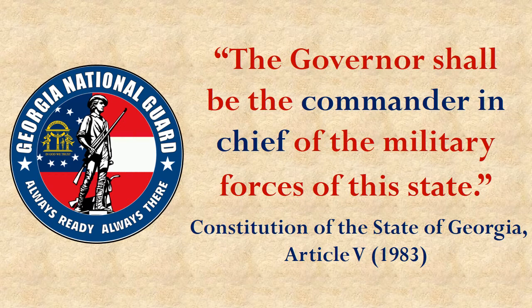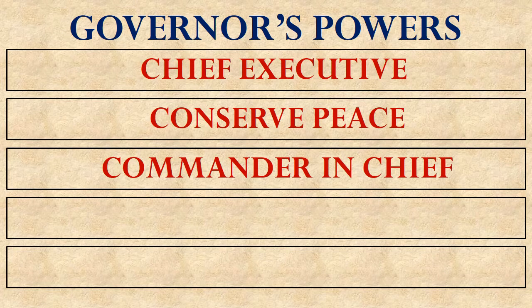In between those deployments, when the president is not calling these troops up for a national cause, they remain under the command of the governor of the state. The governor could use them to defend the state if needed, or to maintain peace through riot control. Most commonly, National Guard troops are used for disaster relief — for example, if there's a flood and the governor needs people throwing sandbags, he can call up the National Guard. This isn't just something Georgia does; there are National Guard troops in all 50 states commanded by the governor of each.